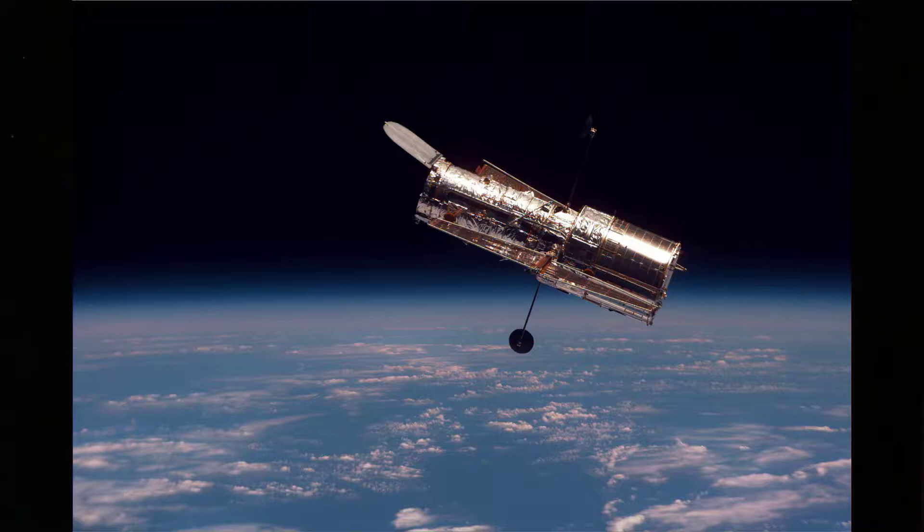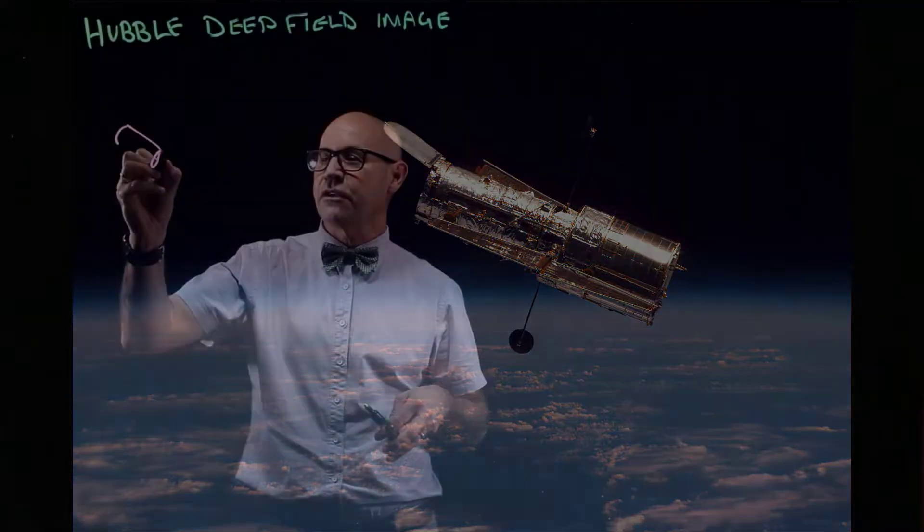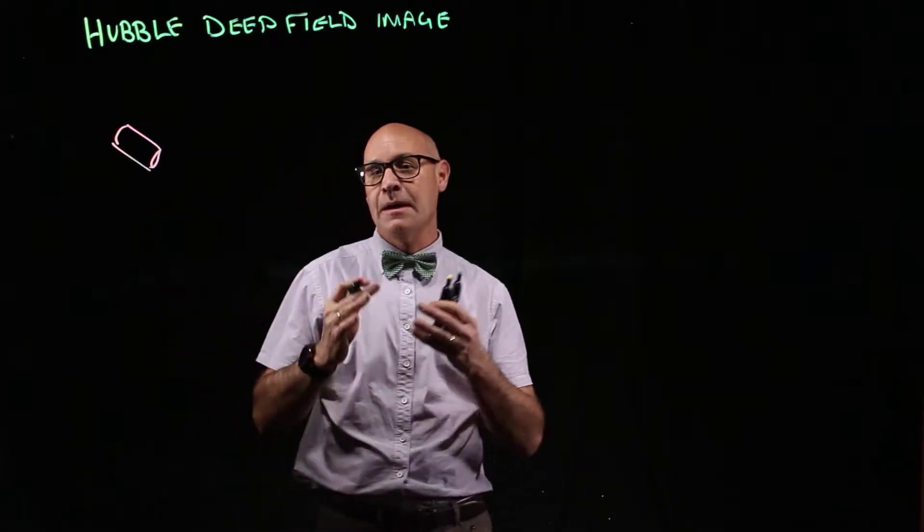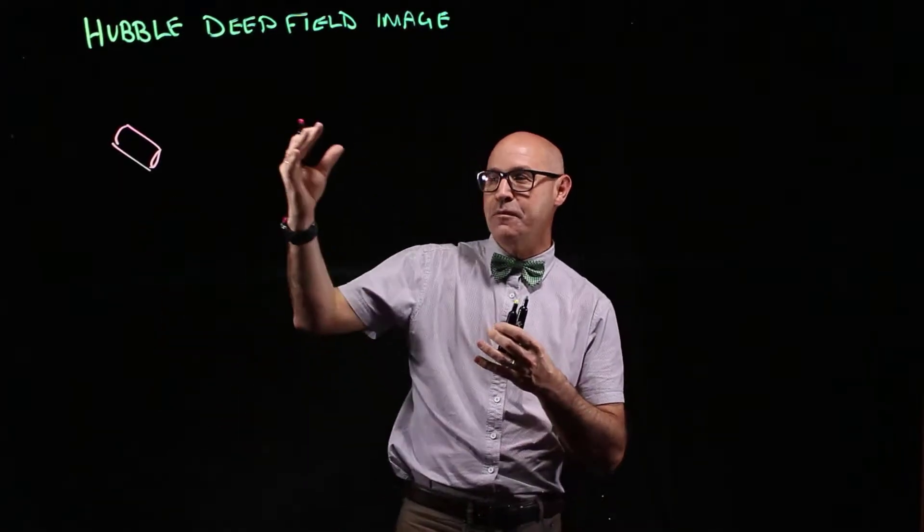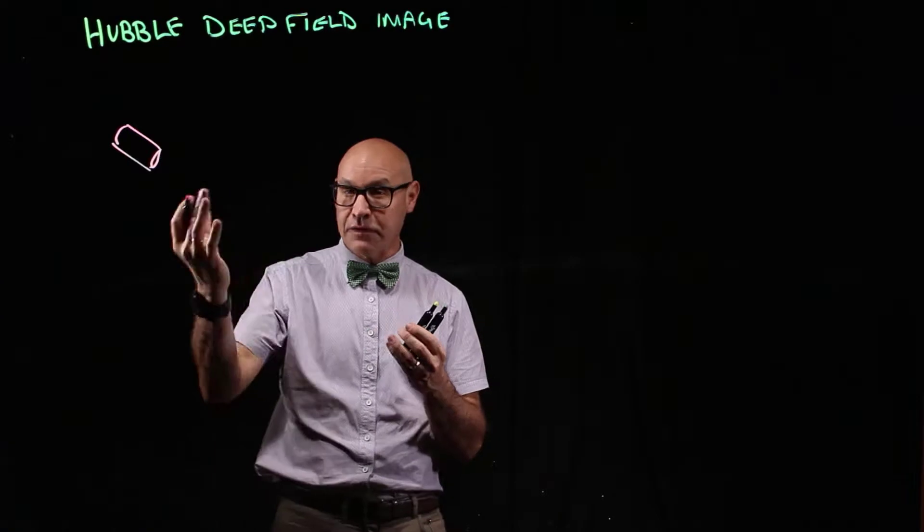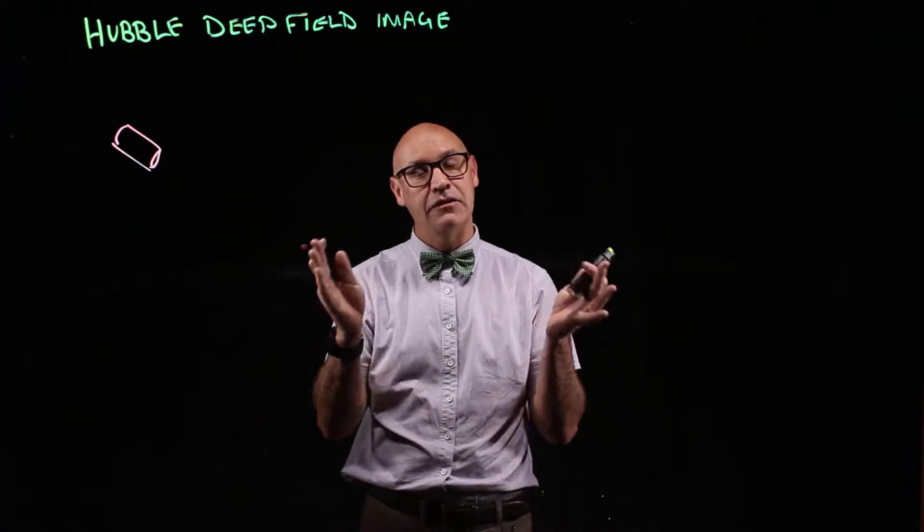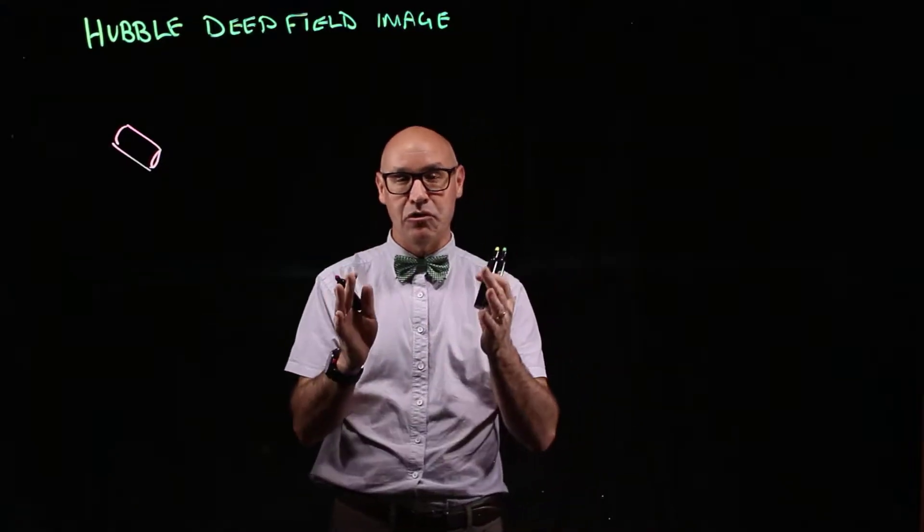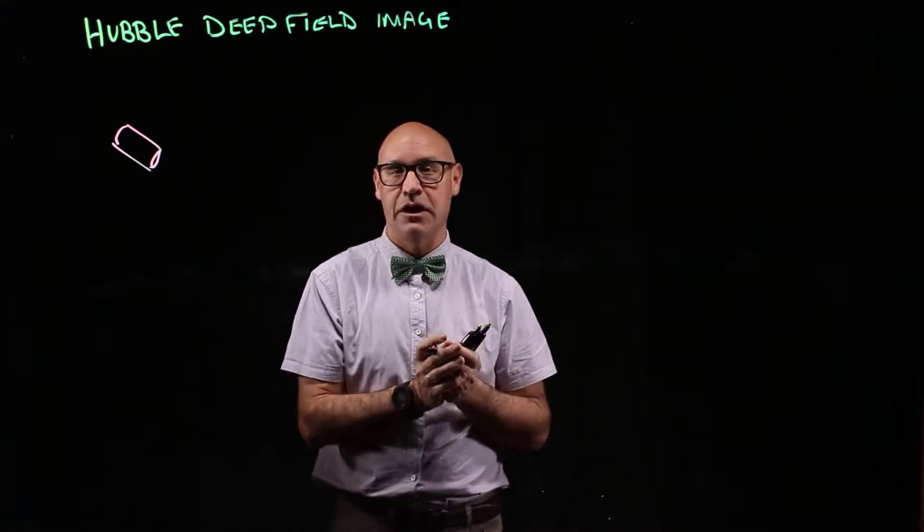The Hubble Space Telescope looks a little bit like this, and it orbits the Earth. It captures information from space, light from space in different parts of the spectrum: infrared, visible light, and also ultraviolet.